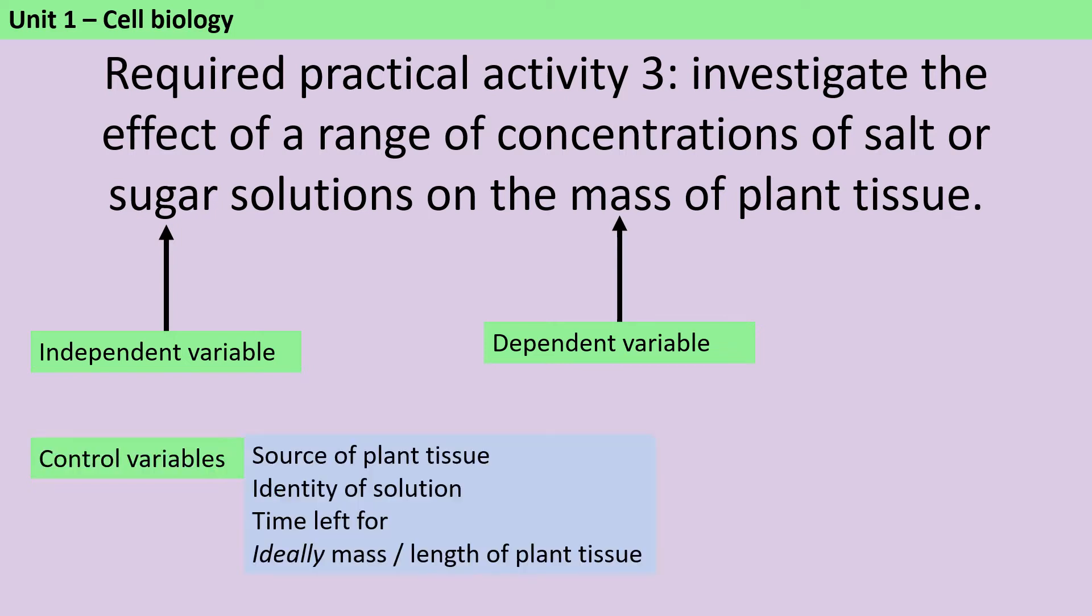So in this investigation, I'm going to keep the same source of plant tissue. In other words, I'm going to make all of my chips out of the same potato. I'm going to use the same type of solution. So although the concentration is changing, if I'm using a salt solution, it will be salt for every single one. I'm not going to use salt for some and sugar for a different one. I'm going to leave all of the pieces of plant tissue for the same length of time.